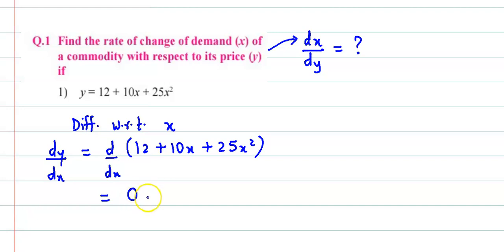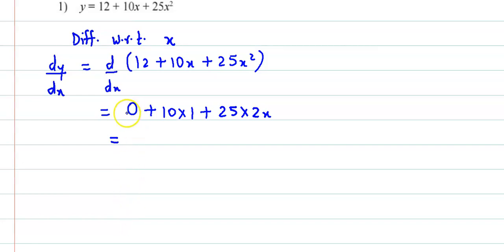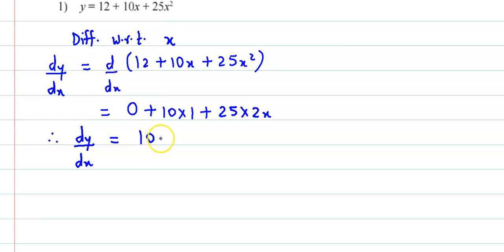ابھی تین terms کا ہم derivative لیں گے. Derivative of 12 — 12 constant ہے تو اس کا derivative 0. Plus 10 coefficient ہے x کا تو وہ ایسی رہے گا, so 10 times derivative of x is 1. Plus 25 into derivative of x squared is 2x. So therefore dy by dx is equal to 10 plus 50x.